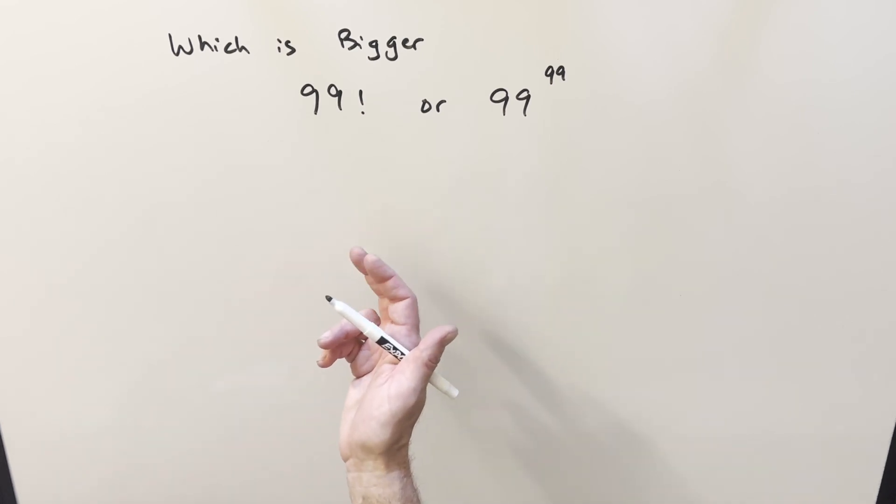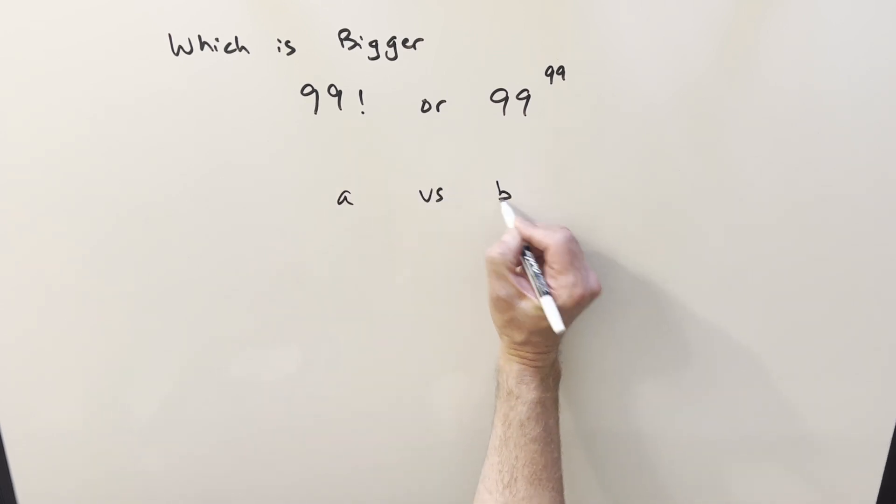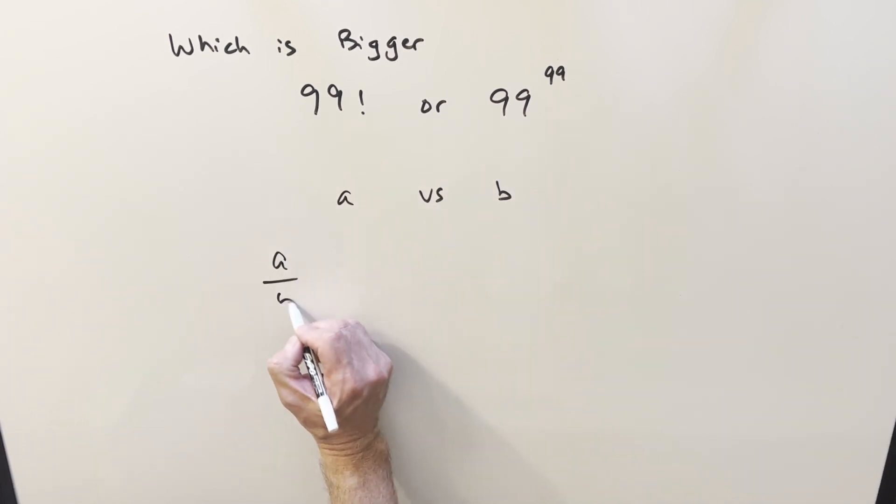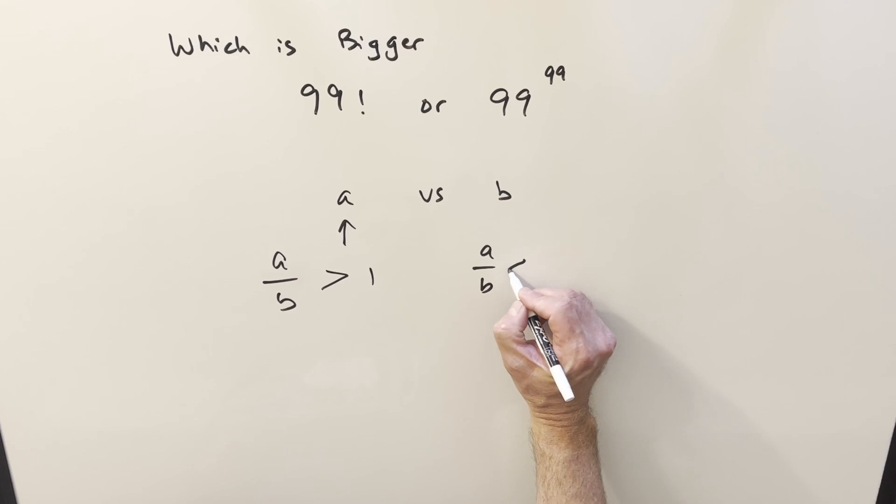What we can do with these which is bigger problems is create it as a fraction. If we're comparing like A versus B, if we create the fraction A over B, if this is greater than 1 we pick A, and if A over B is less than 1 then we'll pick B.